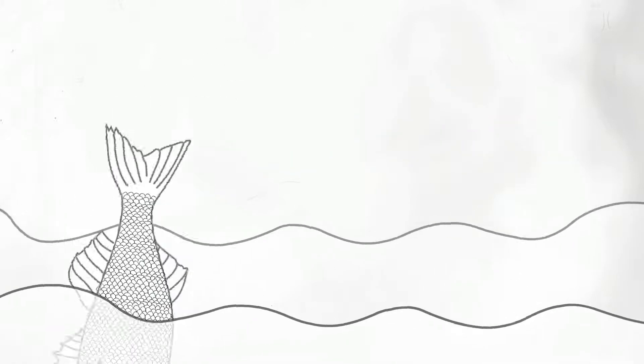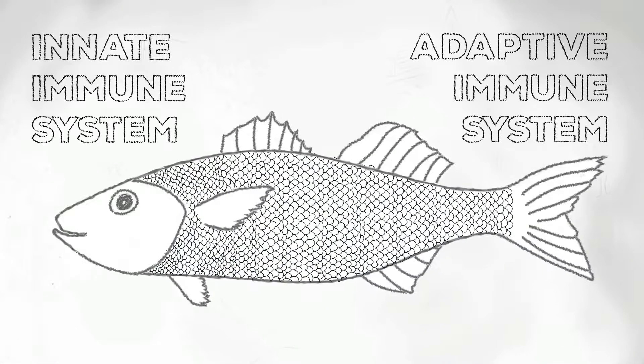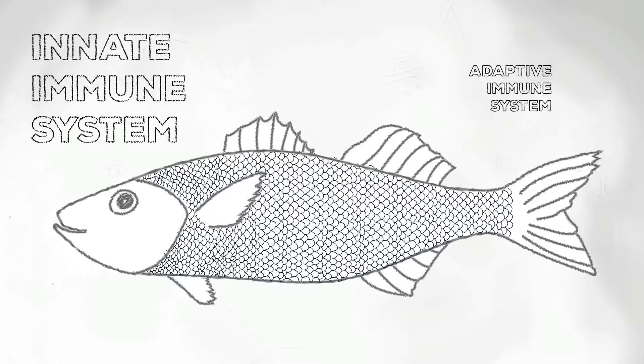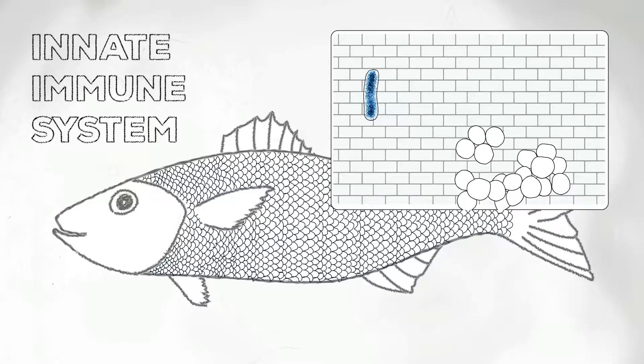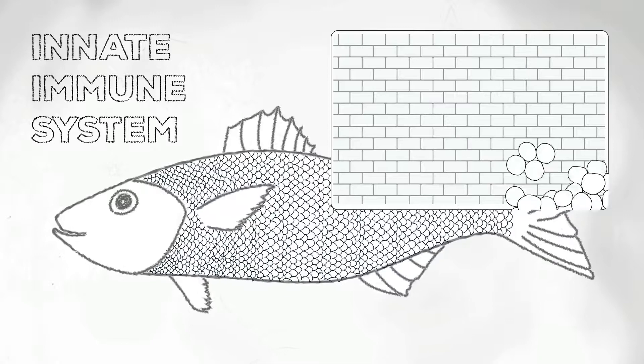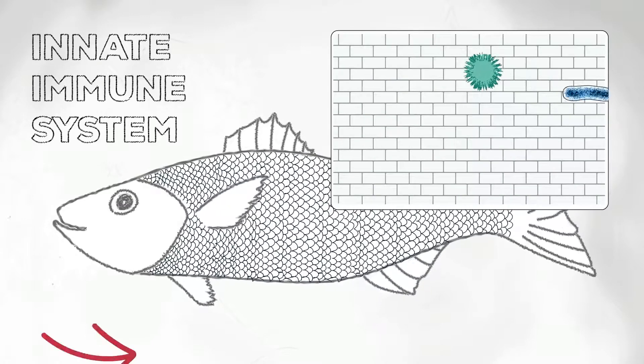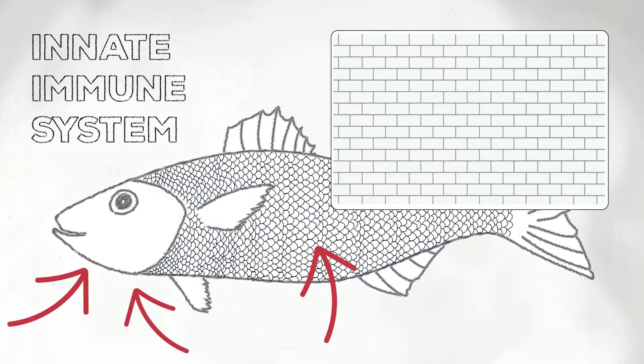The fish immune system consists of an innate immune system and an adaptive immune system. The innate immune system provides a first line of defense to pathogen encounter. For example, the skin as a barrier for pathogen entry would be an innate defense mechanism.